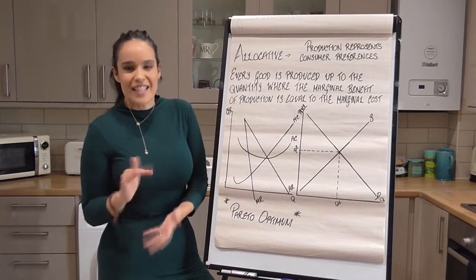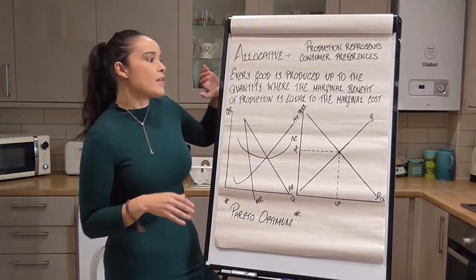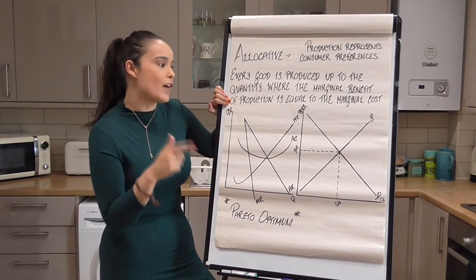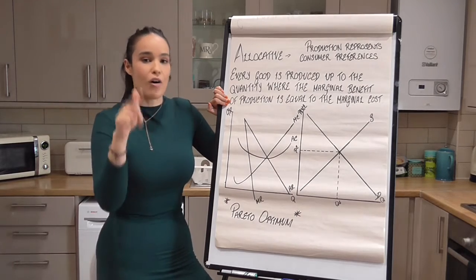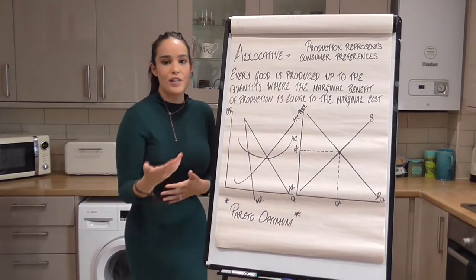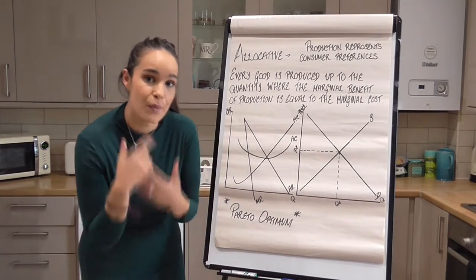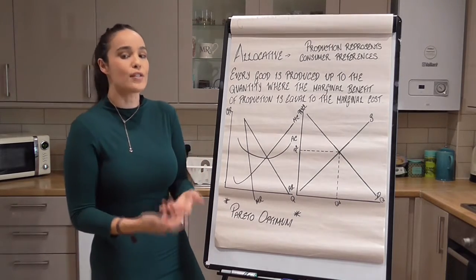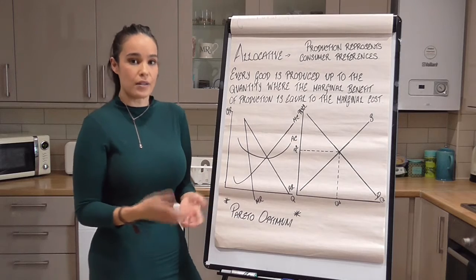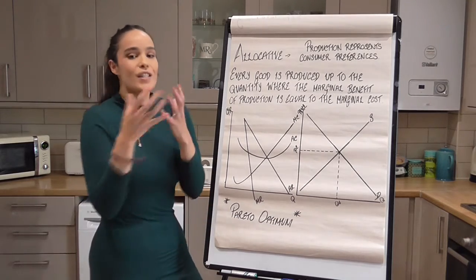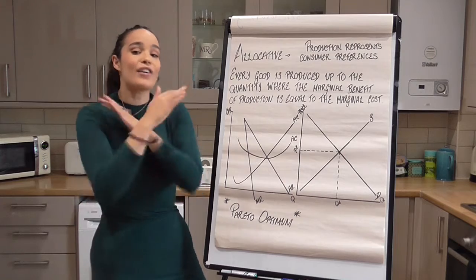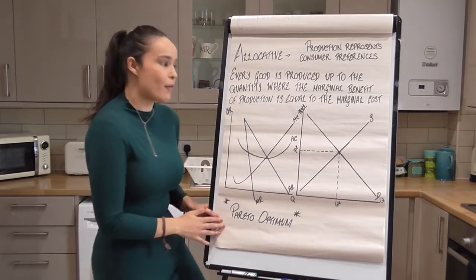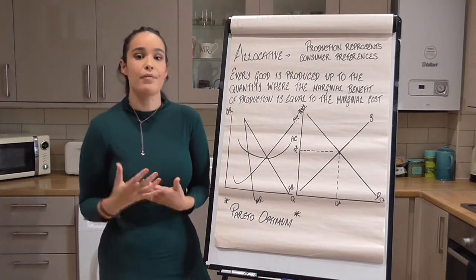We can look at that in more detail and really understand what allocative efficiency is. It means that every good is produced up to the quantity where the marginal benefit of production is equal to the marginal cost of production. Remember, when we use the word marginal, we mean every additional unit. So for every single additional unit, the marginal benefit equals the marginal cost. We can boil that down even further by looking at Pareto optimum. Allocative efficiency would indicate Pareto optimum.